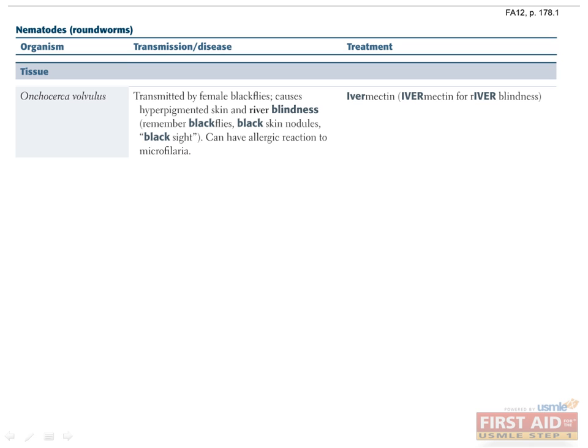Onchocerca volvulus is the cause of river blindness. The black fly carries this worm and releases larvae into human skin during a bite, where they mature into adults. The adults mate and release microfilariae into subcutaneous tissues. These migrating microfilariae cause an inflammatory response characterized by a thick, hyperpigmented, pruritic rash. If these microfilariae reach the eyes, local inflammation can cause blindness — known as river blindness — because this worm is endemic to areas where rivers are found.